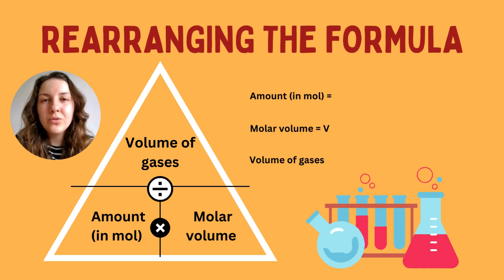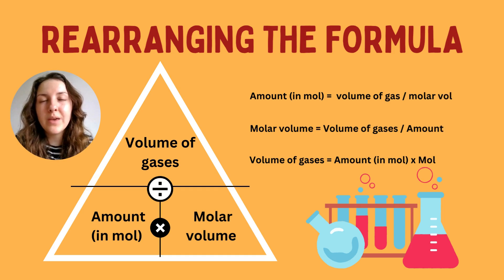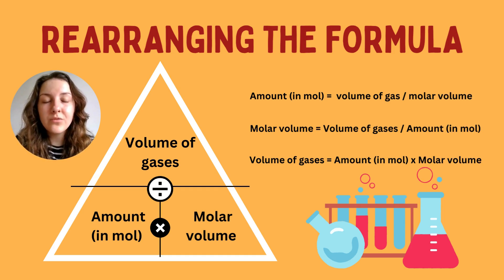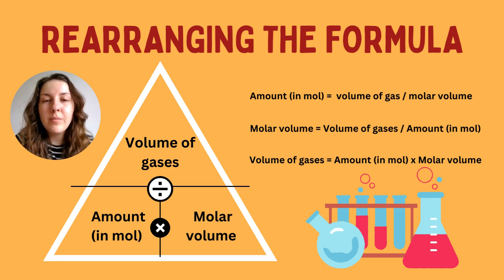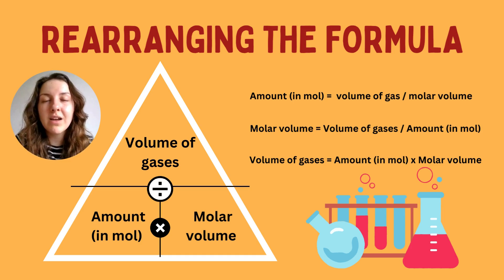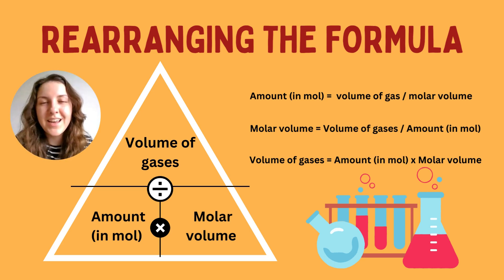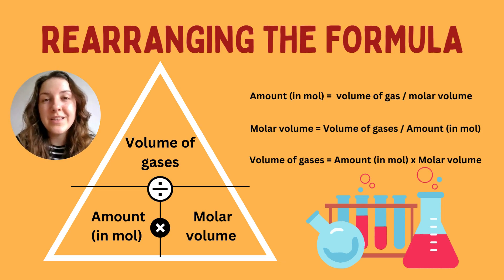One way they could ask you in the exam is to rearrange the formula so you get different subjects depending on what's given in the question. You could be asked to rearrange it to make the amount of moles, the molar volume, or the volume of gas the subject. I've written out these different versions of the formula. You can always put this into a triangle — cover up whatever you want to work out. For example, to find moles, cover that up and you can see volume of gas is divided by molar volume. The horizontal line indicates division, and the vertical line indicates multiplication.